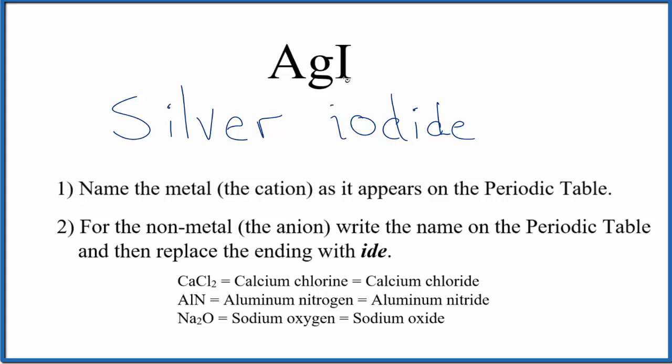Silver is a bit strange. It's a transition metal, but it's always one plus. The iodine, that's one minus. So often it's just left as silver iodide, since it's always going to have a one plus charge.